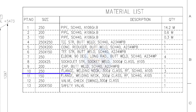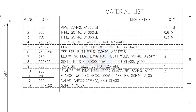Item number 9: 250 NB weld neck flange, class 300 pound, raised face, schedule 40, quantity 3. Item number 11: 150 NB weld neck flange, class 300 pound, raised face, schedule 40, quantity 1.